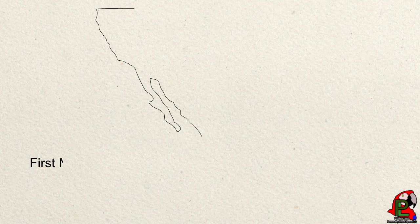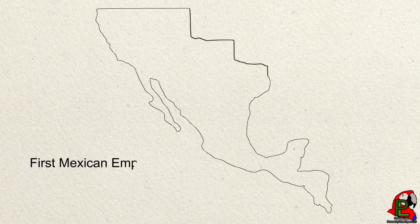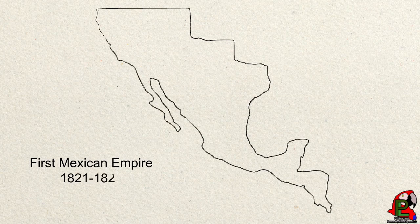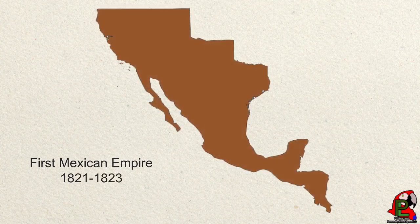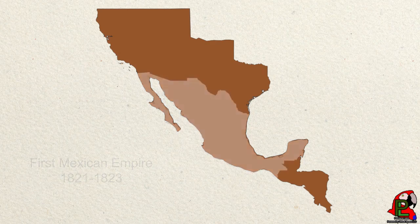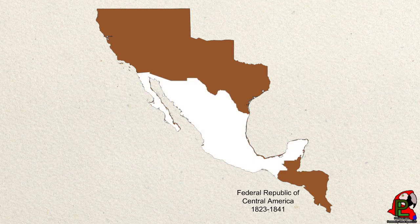A closer look at Mexico's history, and you will find out that Mexico once had an empire from Costa Rica to California, across to Texas, with parts of Wyoming, Kansas, and Oklahoma. After Mexico gained its independence from Spain in 1821, these areas were eventually lost due to internal political issues and war during the nation's early decades.